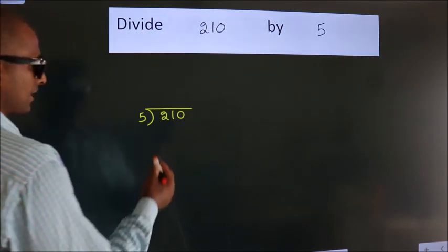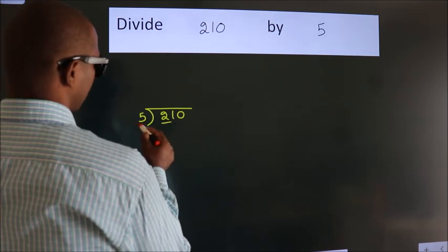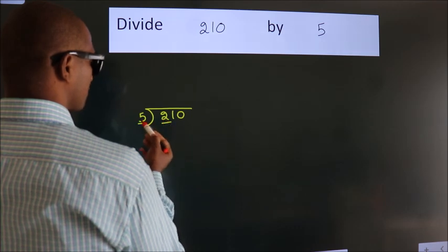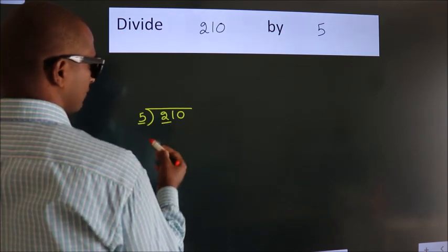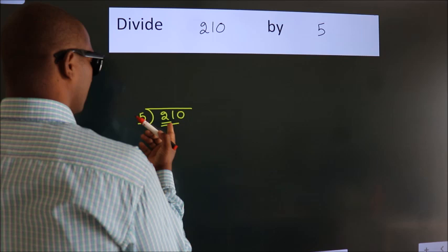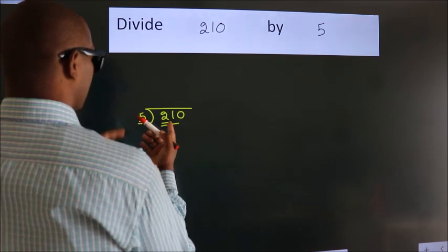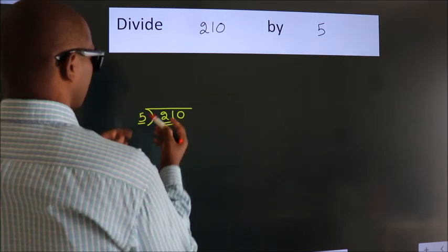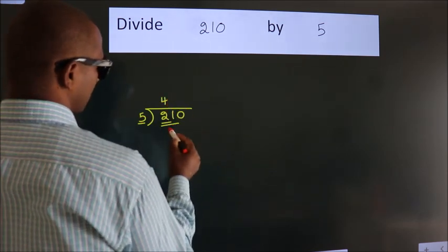Next. Here we have 2. Here 5. 2 is smaller than 5. So we should take 2 numbers, 21. A number close to 21 in the 5 table is 5 times 4 is 20.